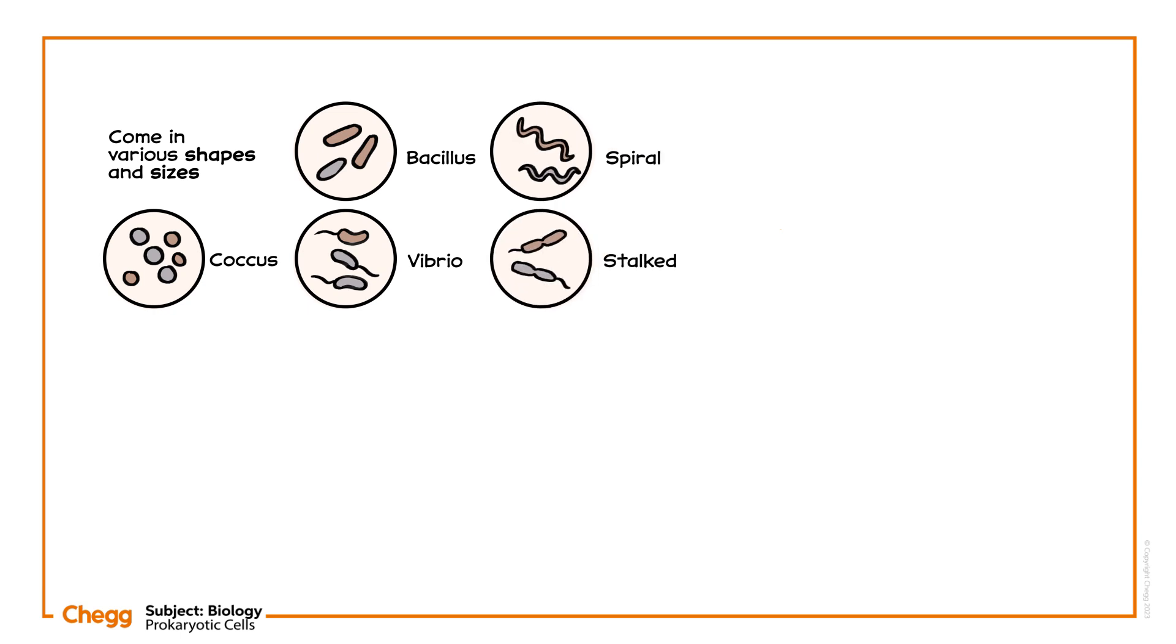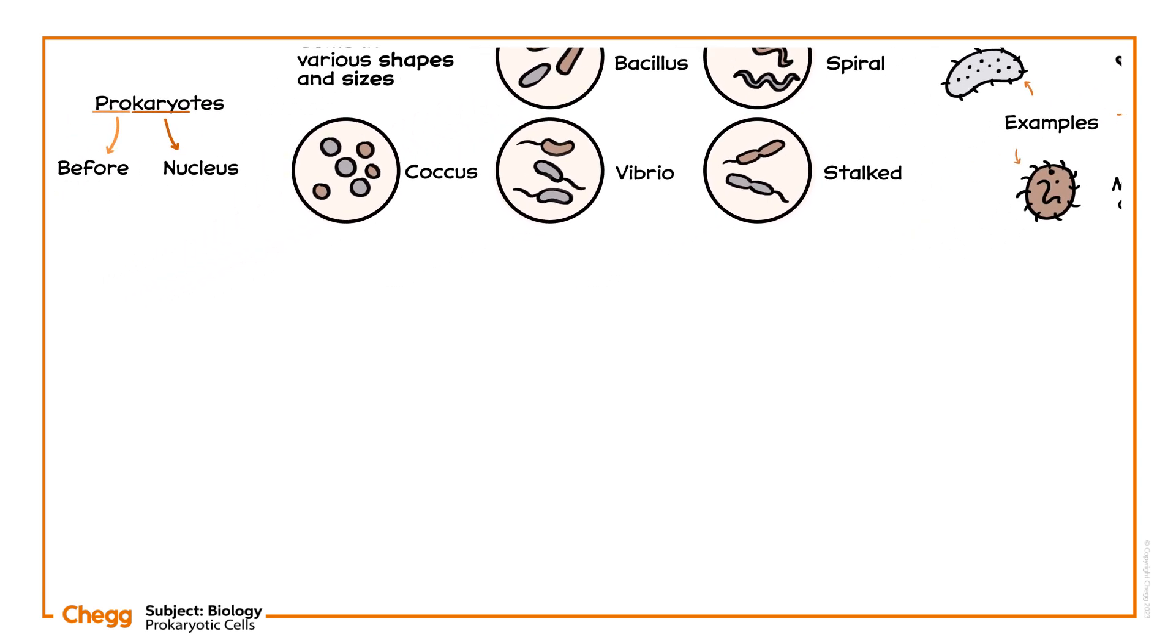Prokaryotes are primarily unicellular organisms and come in various shapes and sizes, like Coccus, Bacillus, Vibrio, Spiral and Storked. Examples of prokaryotes include bacteria, blue-green algae and mycoplasma, also known as pleuroneumonia-like organisms or PPLOs.